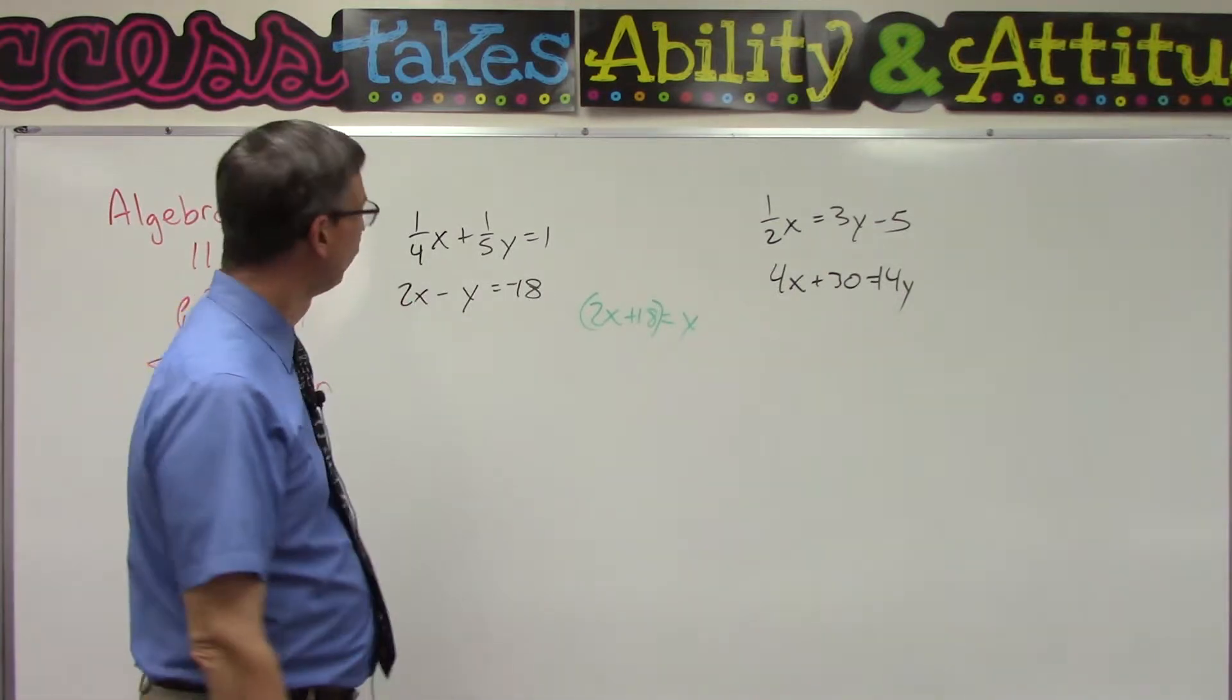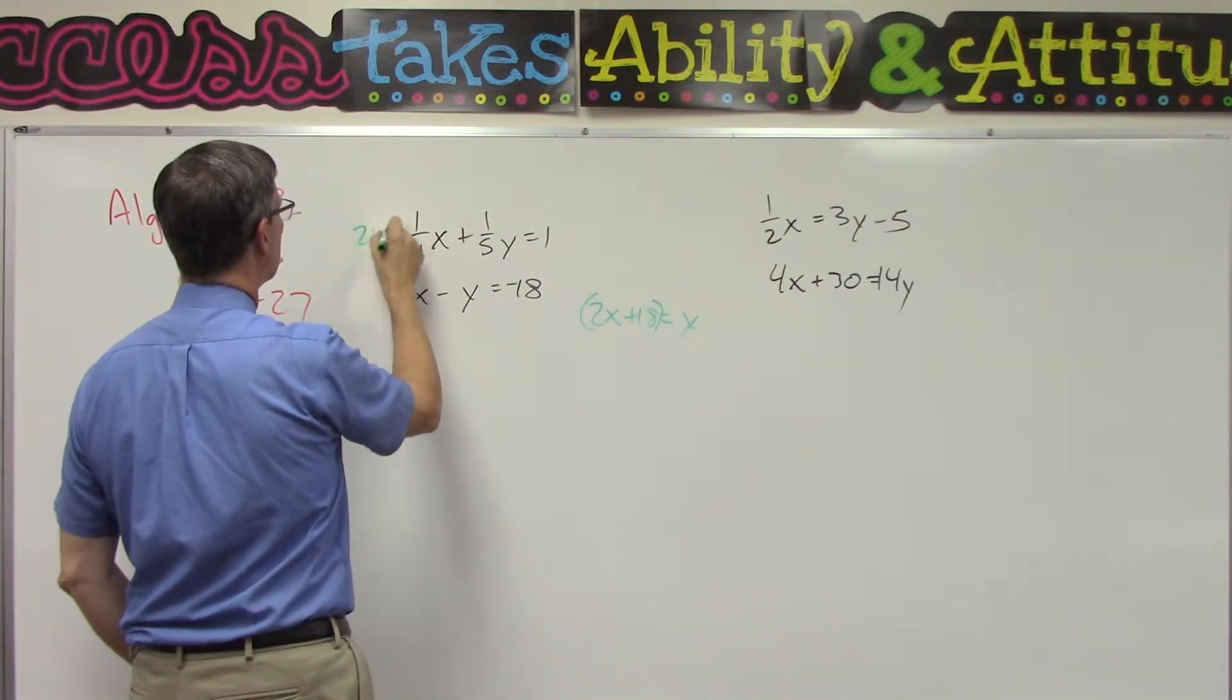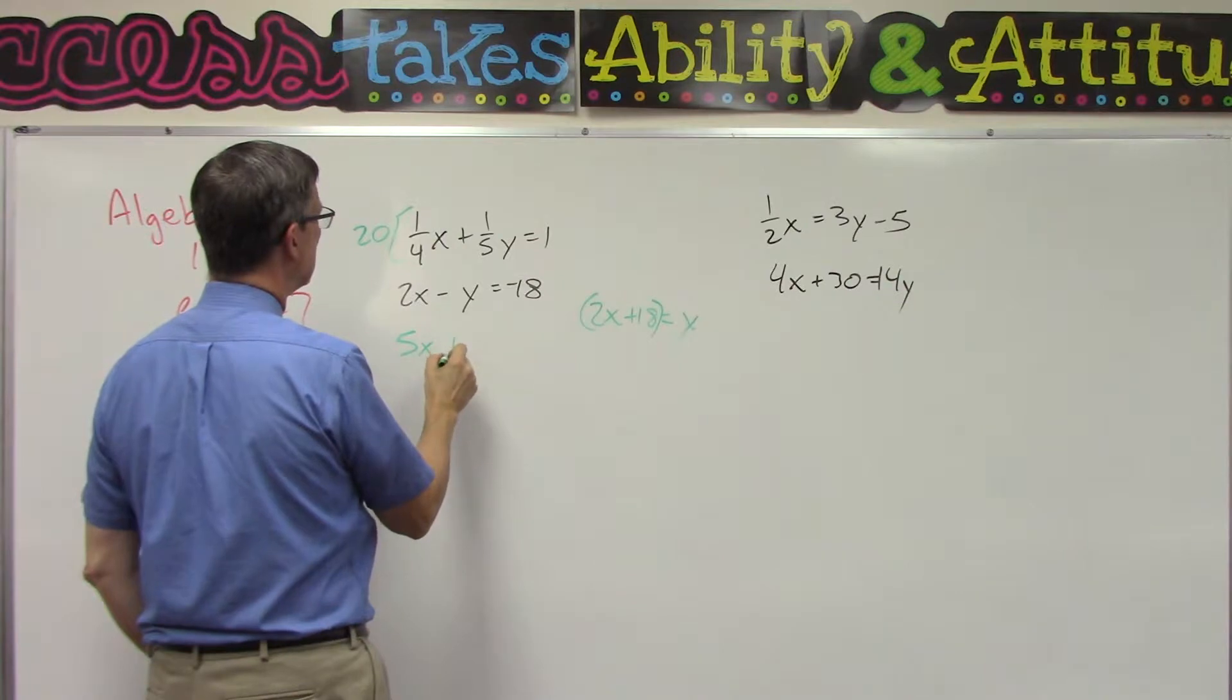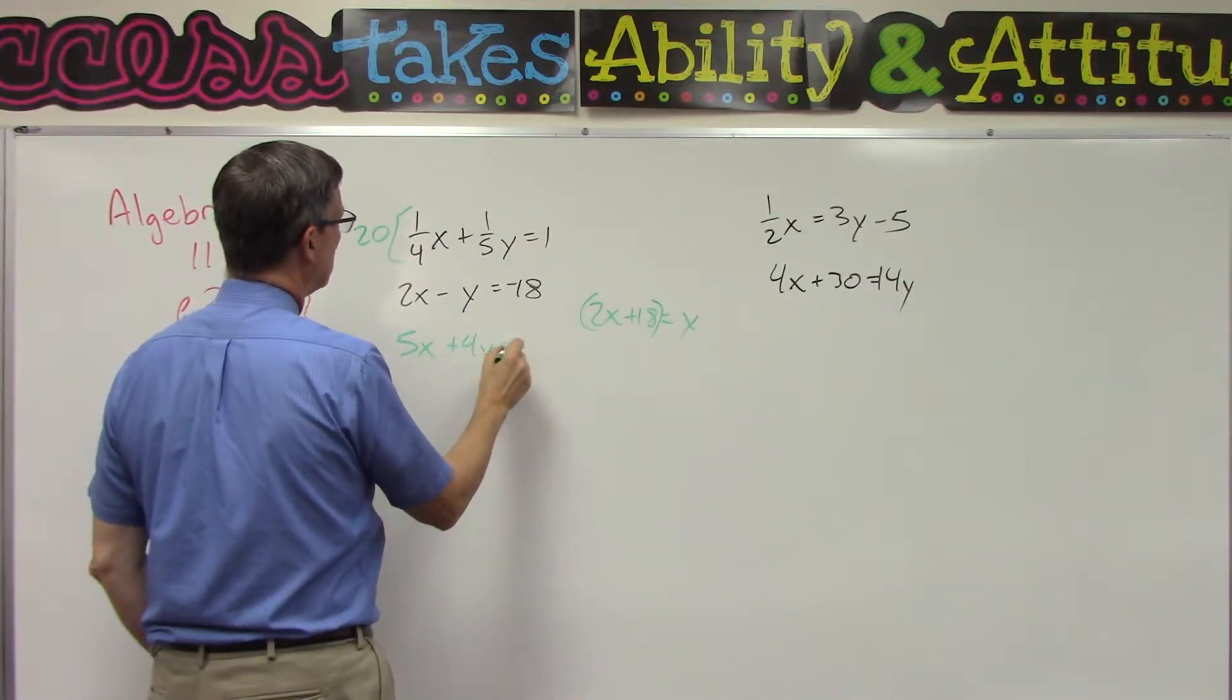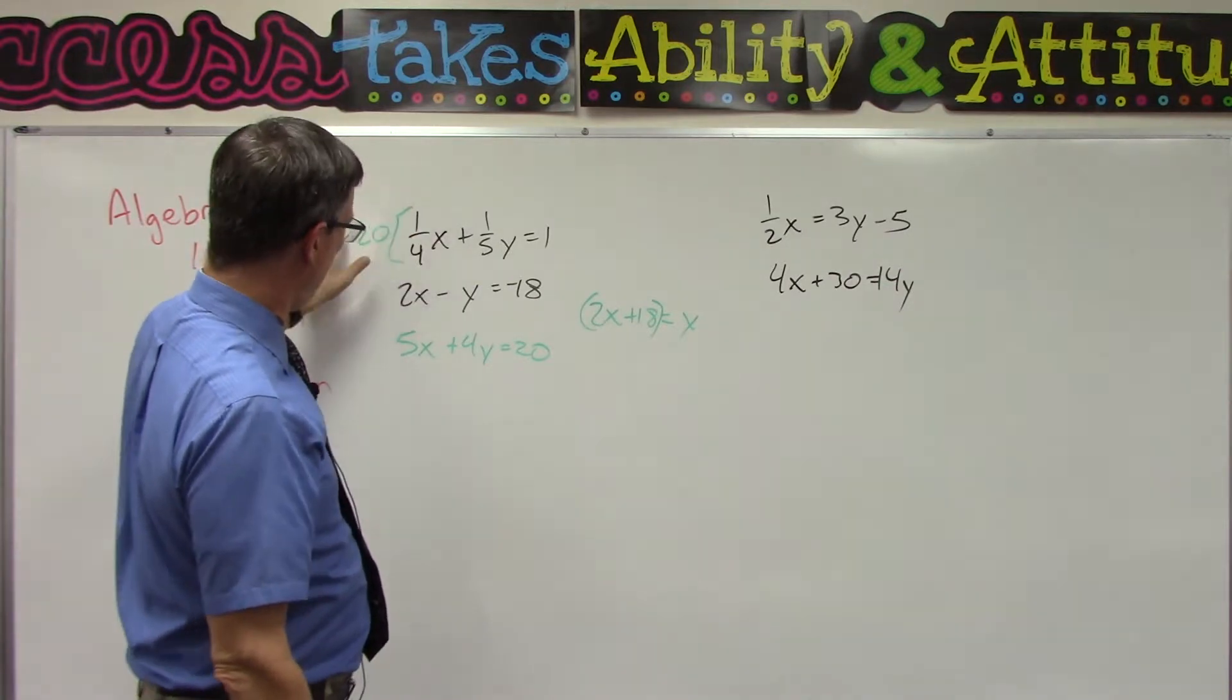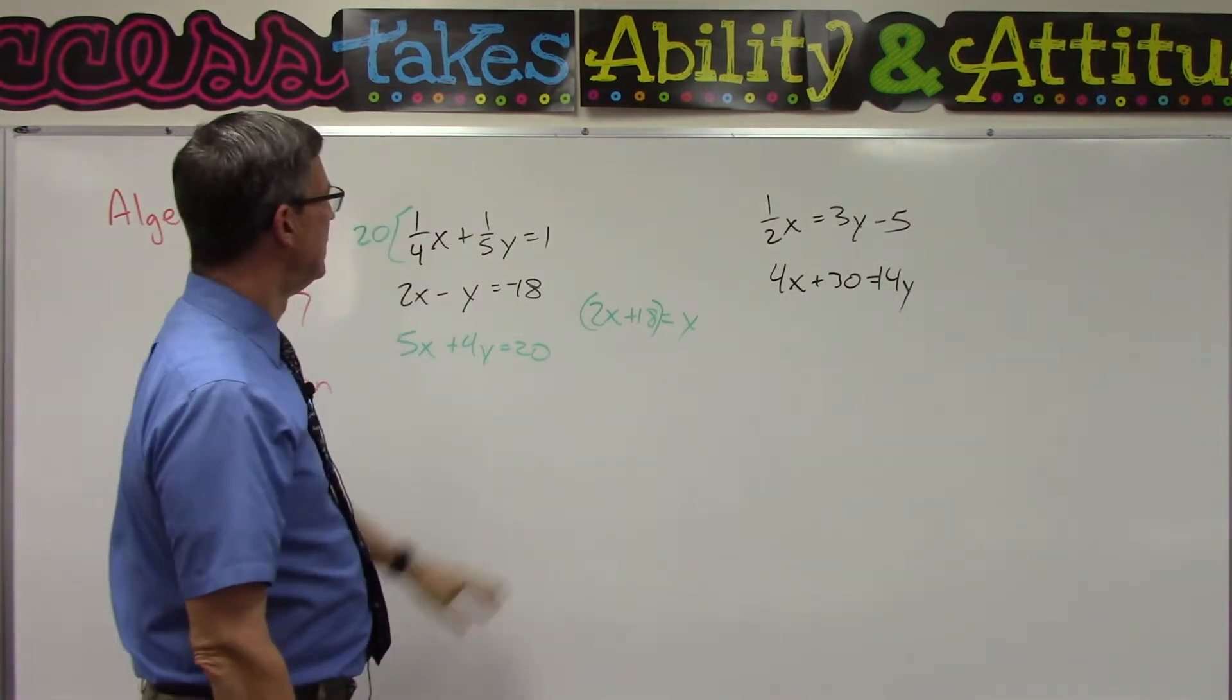Find a common denominator, which in this case would be 20, and just multiply everything through by that. That will give you 5x plus 4y equals 20. We're distributing it times each of these.